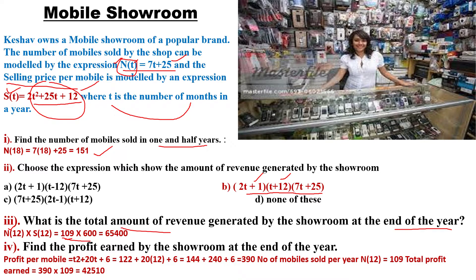Find the profit earned by the showroom at the end of the year. Profit per mobile = t² + 20t + 6. At t = 12: 12² + 20(12) + 6 = 144 + 240 + 6 = 390. Number of mobiles sold per year n(12) = 109. Total profit = 390 × 109 = 42,510.